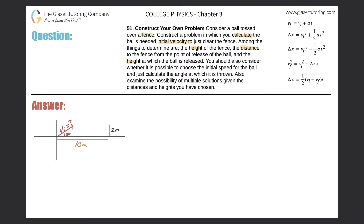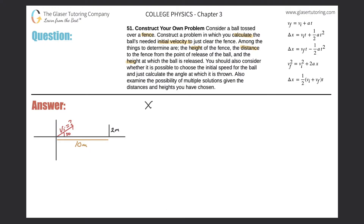Let's lay out our components. We'll talk about all of our x components on one side and all of our y components on the other side. I have this initial velocity at a certain angle, so it's really in two frames — the x and y frame. What I want to do first is break it up into its components.